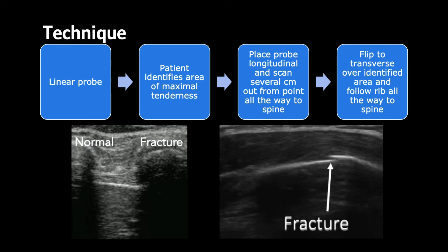Make sure to check both ribs above and below, because the fracture may not be perfectly on the rib you're looking at. In the longitudinal view, you can see what a normal rib looks like. In the fracture, you can see inflammation and effusion. In the transverse view, you can see a step-off. The fracture is much more clear to see in the transverse viewing window.